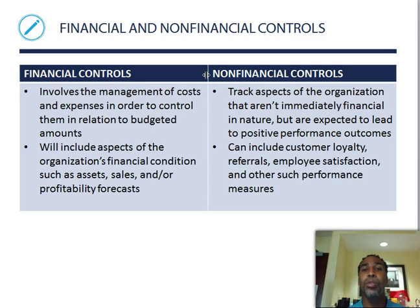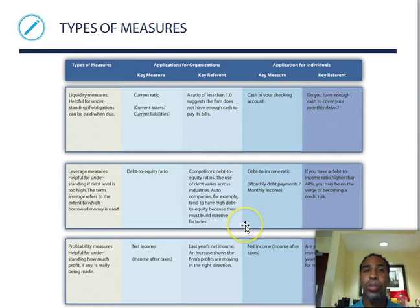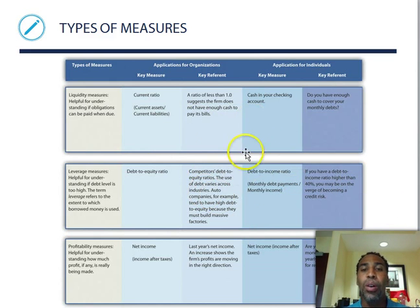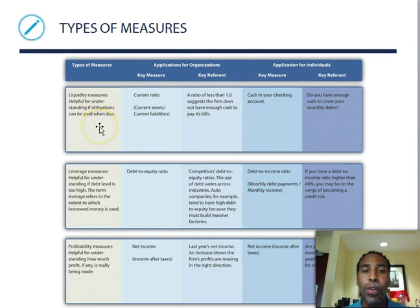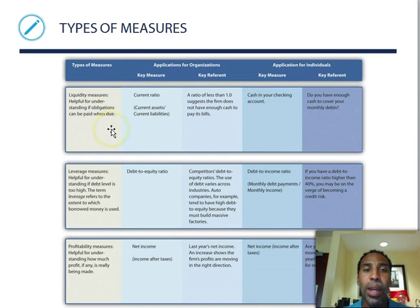How nice you are to a customer is going to influence how much money that customer gives you. Non-financial controls can include customer loyalty, referrals, employee satisfaction, and other performance measures. One key financial measure is liquidity — helpful for understanding if obligations can be paid. The current ratio is current assets divided by current liabilities; a ratio of less than 1.0 suggests the firm does not have enough cash to pay its bills.